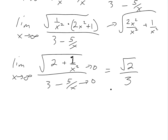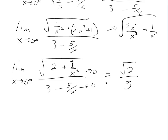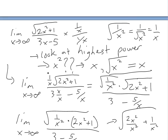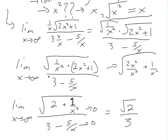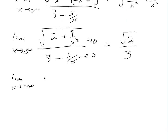But if we were doing the limit as x approaches negative infinity, this one is tricky because the top involves an odd function. If we put a very large negative number in, the result is going to be negative. So for the limit as x approaches negative infinity, this would equal negative √2 over 3.